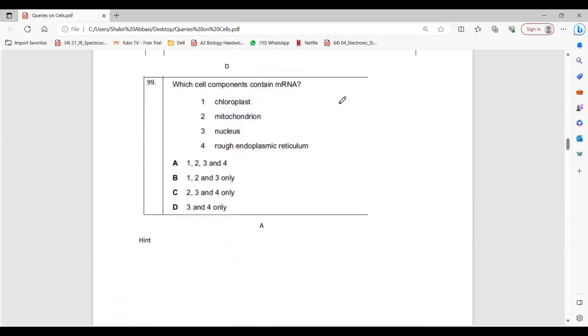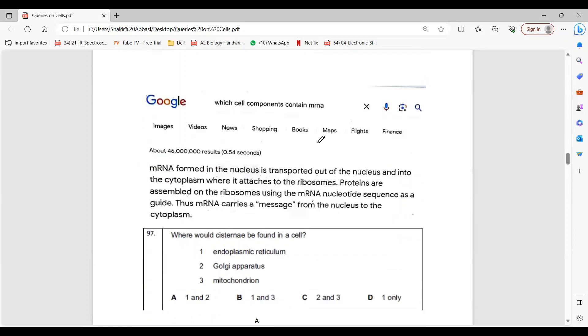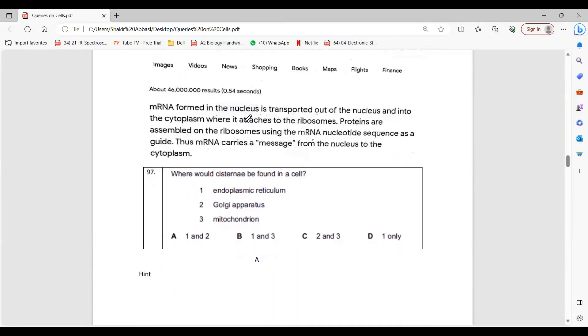Then the question is which components contain mRNA. You know chloroplast has DNA so it will have mRNA as well. Mitochondria will have the same, and nucleus has DNA and that makes mRNA so it has mRNA. And ribosome - RER has ribosome attached, so mRNA goes there so that ribosome could make protein. So all of these have mRNA. Here is the hint, you can read this.